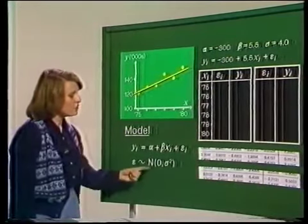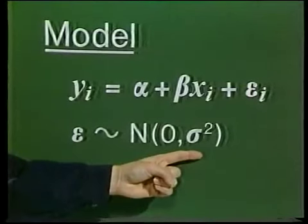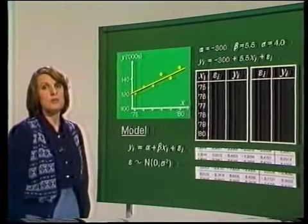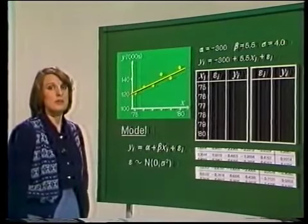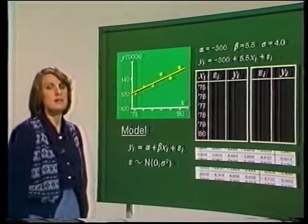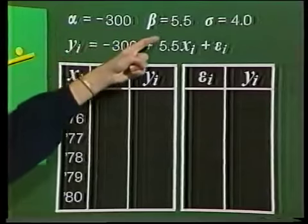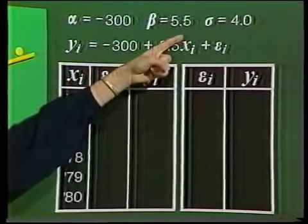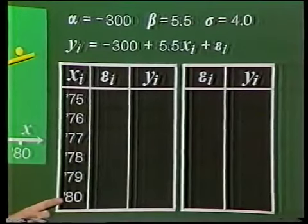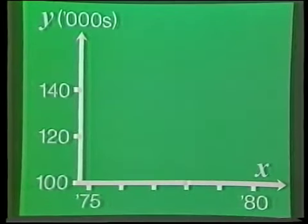So each of the epsilon i's will have some probability distribution or other. We're going to assume that the epsilon i's are normally distributed with mean 0 and some value of variance which we'll denote by sigma squared. This implies that all these error terms are from the same distribution. Of course, we don't know the true equation of the line. We don't know the values of alpha and beta and we don't know sigma squared either. So let's assume some values. Then we can simulate some data and get an insight into the process. Let's say alpha is minus 300, beta is 5.5 and we'll give sigma a value of 4 with the x values ranging from 75 to 80. We've chosen these values to correspond pretty well with the divorce data.